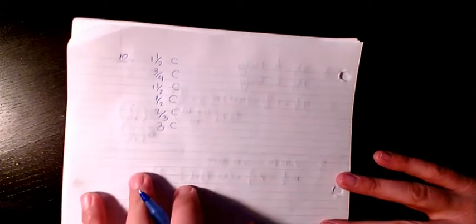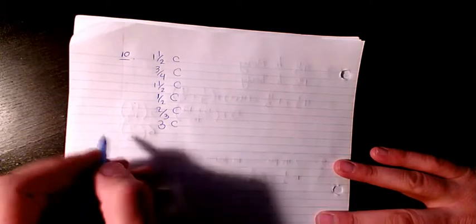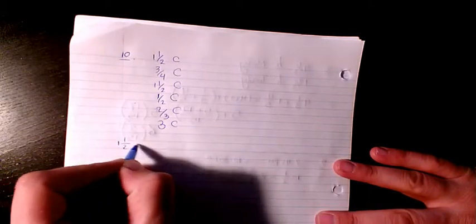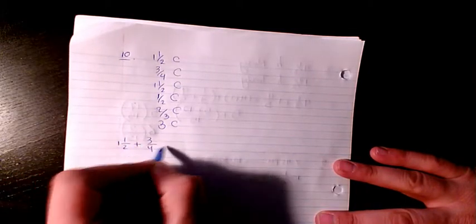So it means that we need to add all of them together: 1½ plus ¾ plus 1½ plus ½ plus ⅔ plus 3.